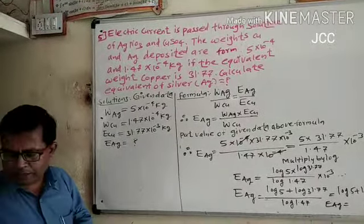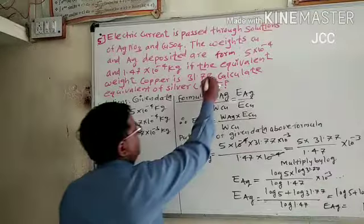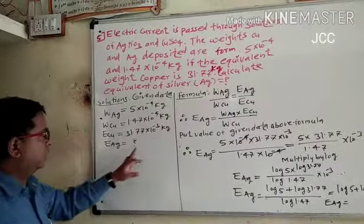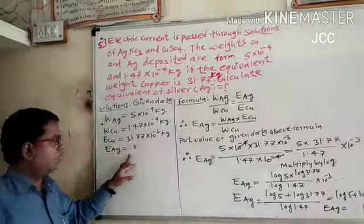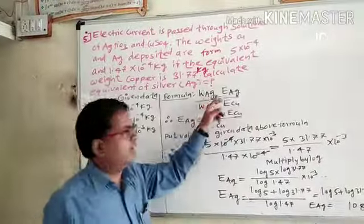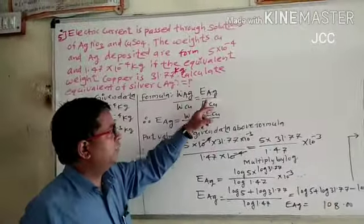This equals 10^-3. This is how we identify. We are using the formula: weight of element 1 divided by weight of element 2 equals equivalent weight 1 divided by equivalent weight 2.